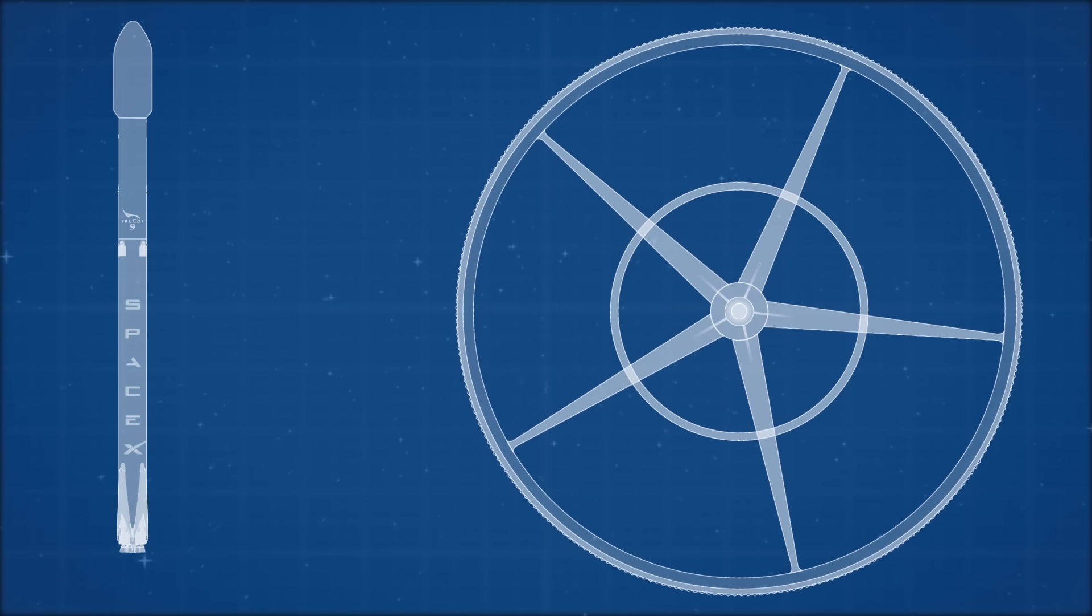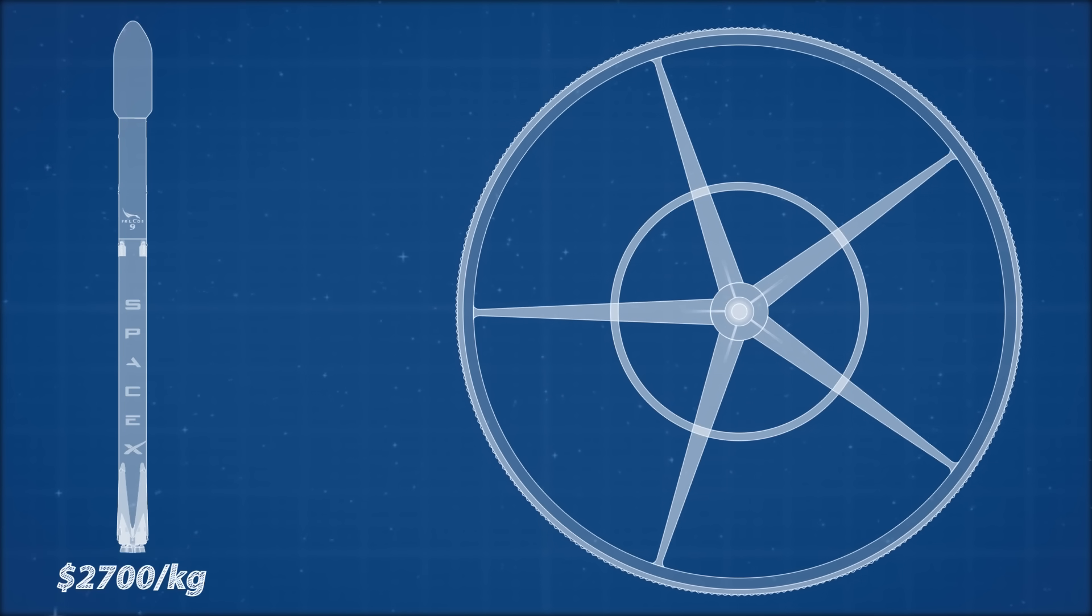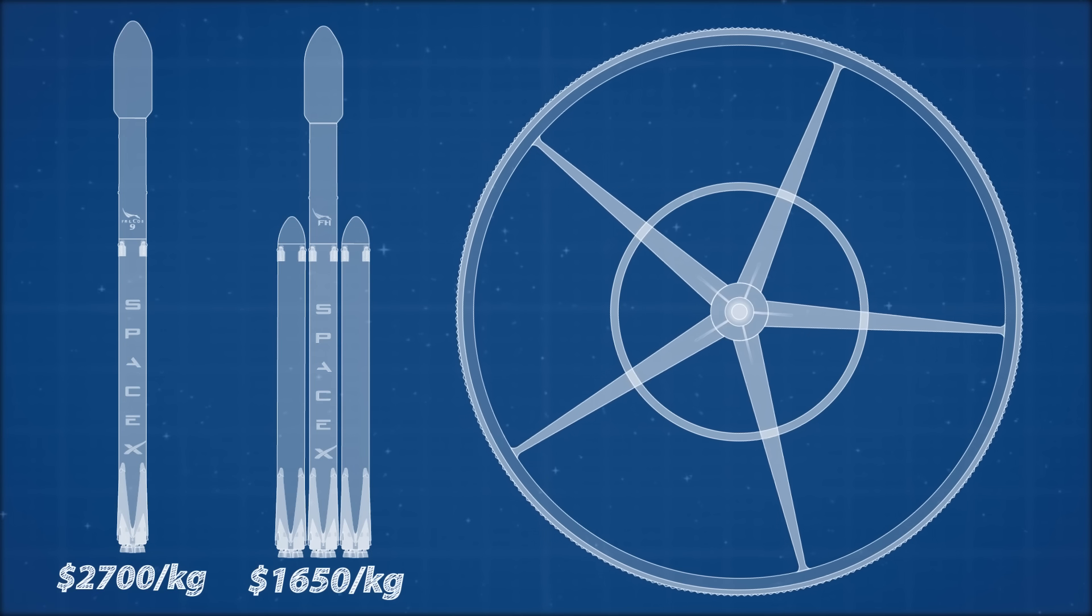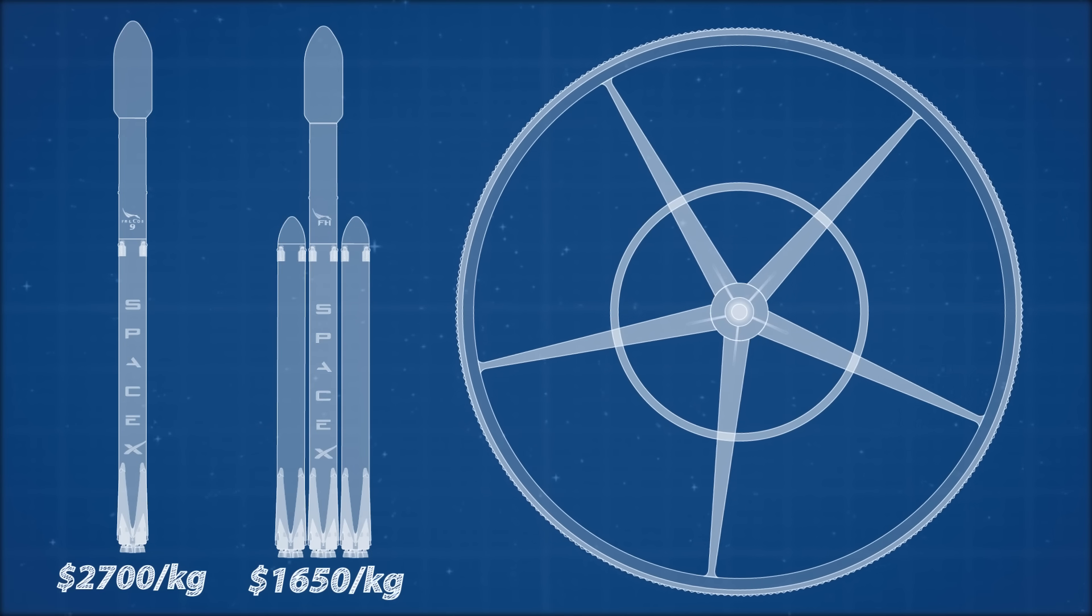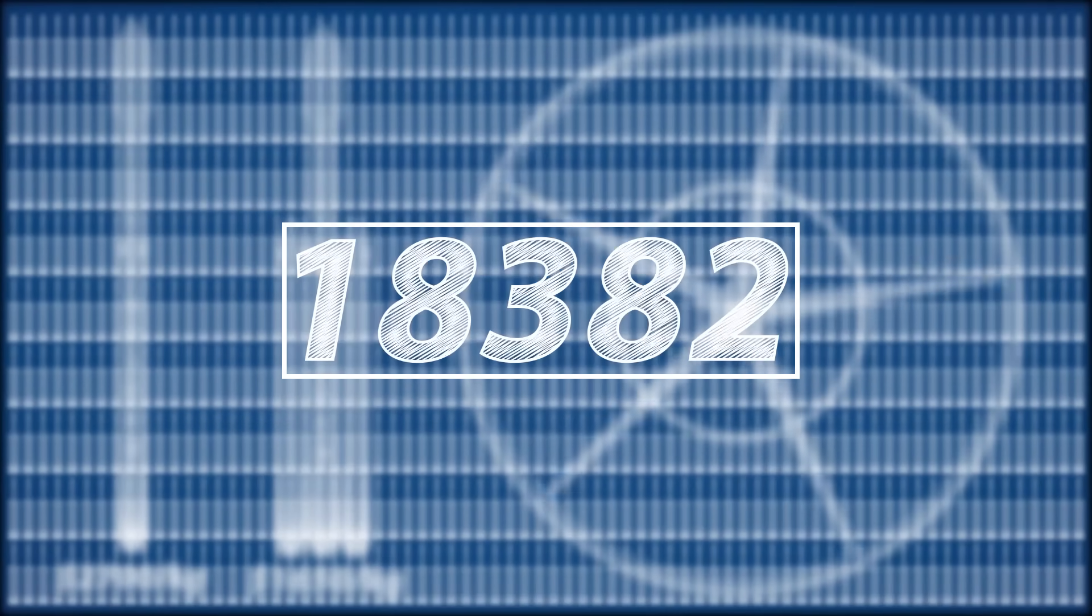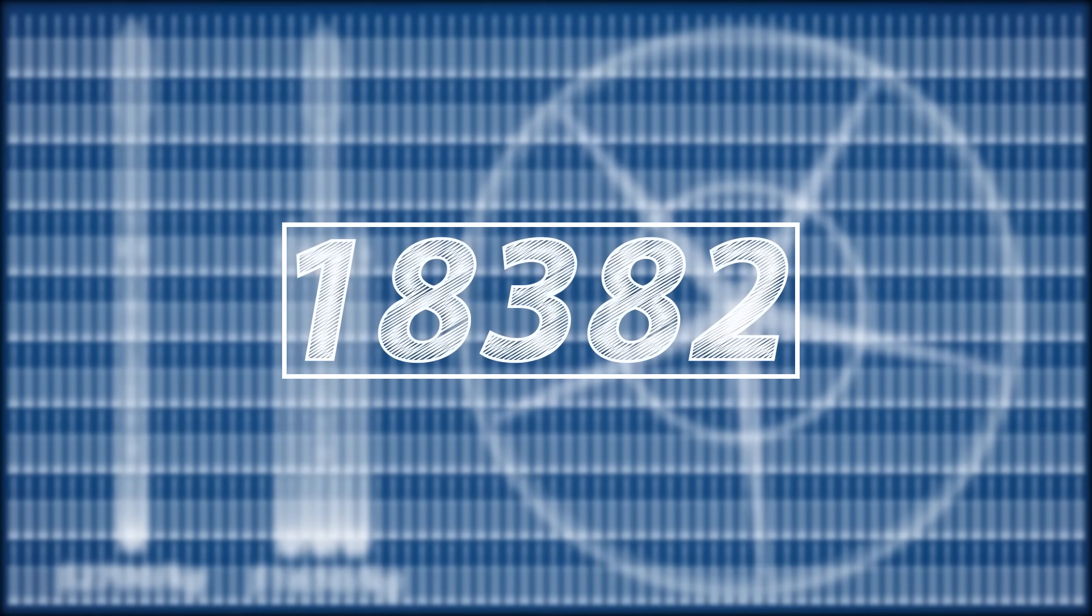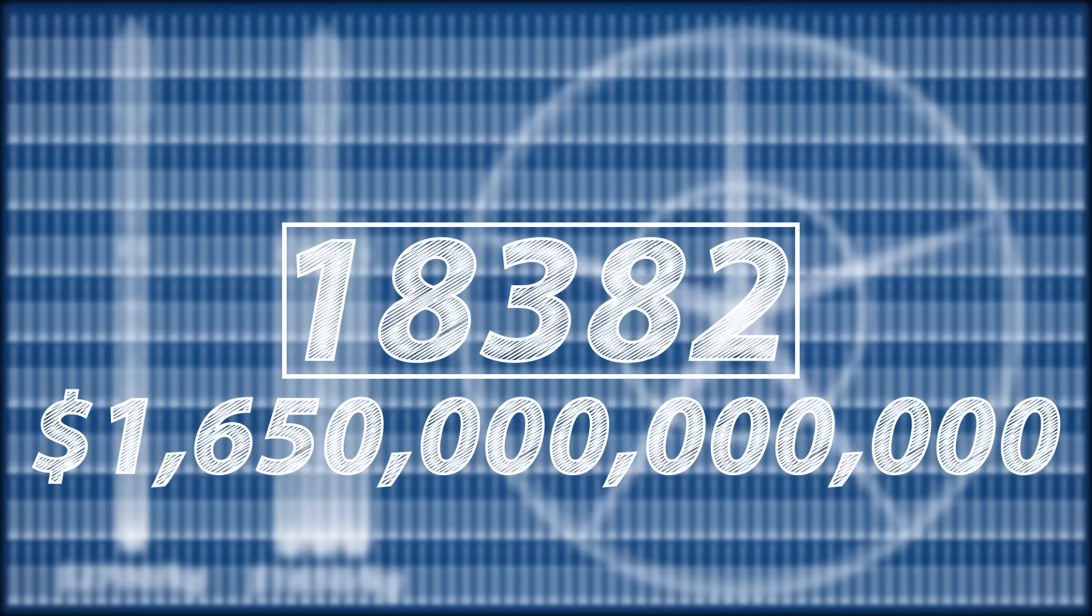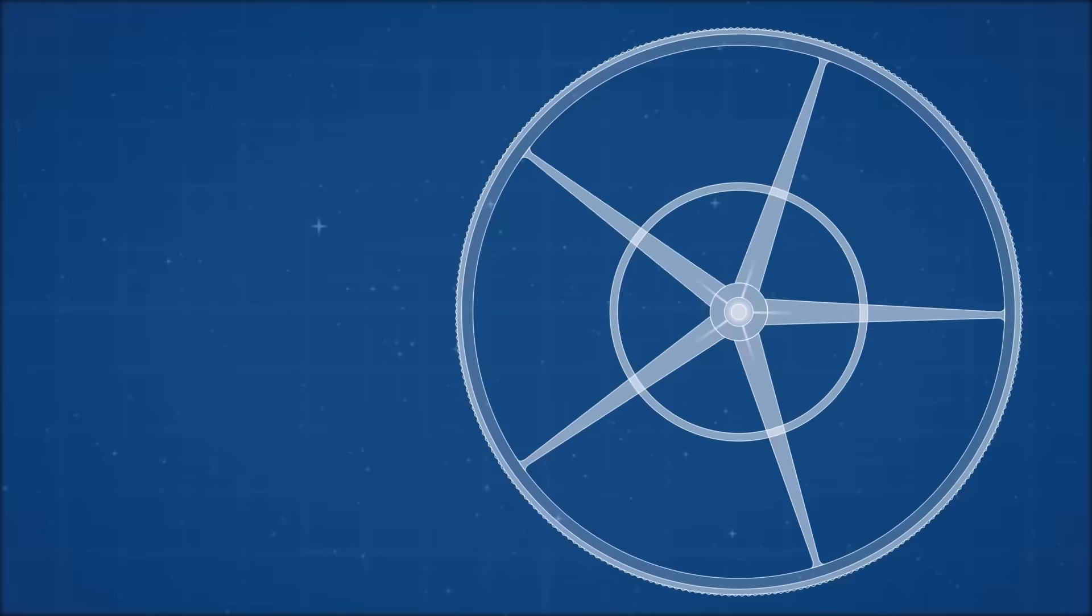SpaceX can currently launch a kilogram into space for about $2700 with their Falcon 9 rocket. This will be reduced to $1650 per kilo when they launch their Falcon 9 Heavy variant at the end of the year. But it would take over 18,000 launches to bring the 1 million metric tonnes to low Earth orbit. That's $1.65 trillion to just get the materials of Elysium into space with current technologies.